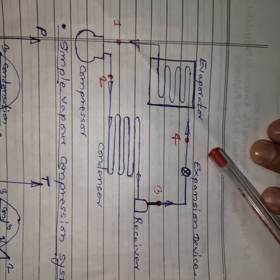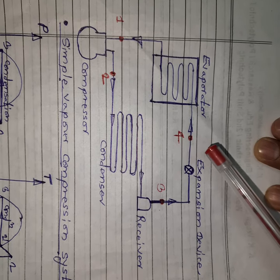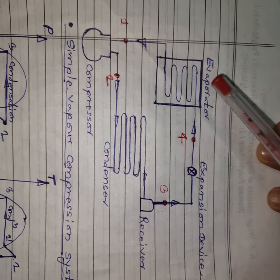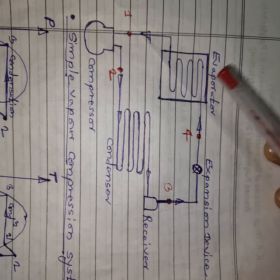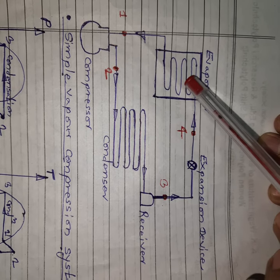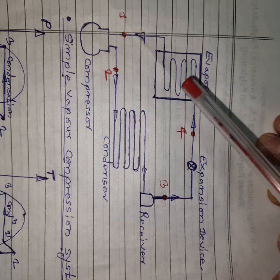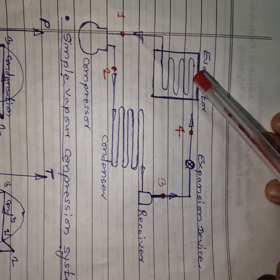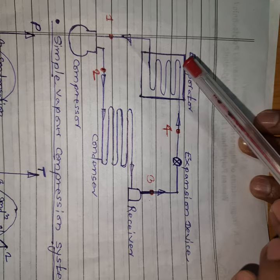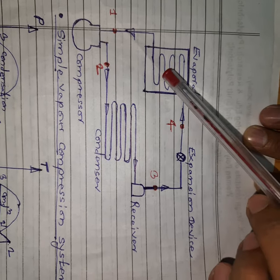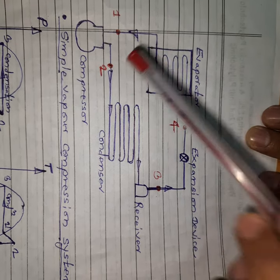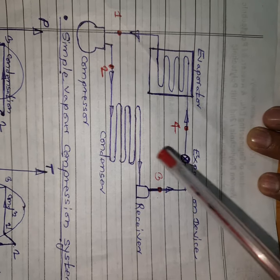Temperature goes below zero degrees centigrade. Low pressure, low temperature liquid refrigerant is supplied to the evaporator, which is kept in the system to be cooled. As liquid refrigerant moves inside the evaporator, it absorbs heat from the surroundings, and the surroundings become cooled — that is the cooling effect, the output of the refrigeration system. There is a phase change: liquid refrigerant is converted into vapor refrigerant, which is sucked back by the compressor. The compressor increases pressure and circulates the refrigerant in the closed cycle.